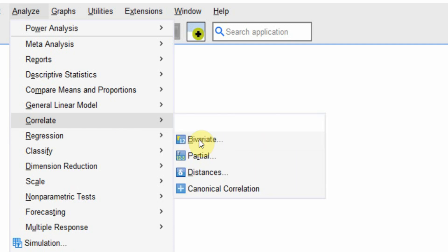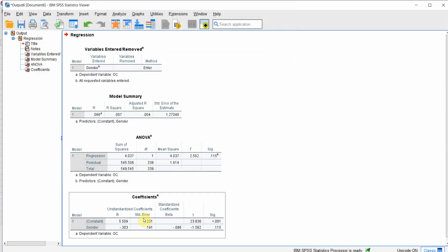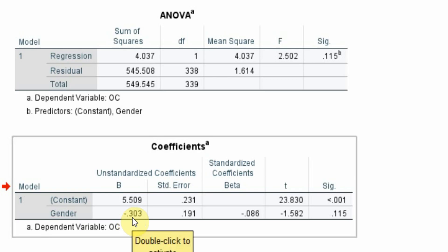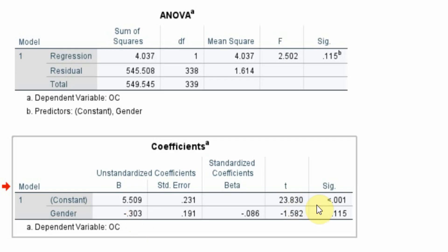A quick recap: go to Regression and press OK. The trickiest part is the minus sign and how to interpret it. The logic is simple — if there is a negative sign, the category with the lower coded value has higher commitment. In this case, male is coded 1 and female is 2, so the negative sign means male have higher commitment. A positive sign would mean female have higher commitment. However, this difference is not significant because the significance value is greater than 0.05 and t is less than 1.96.